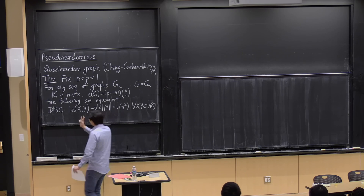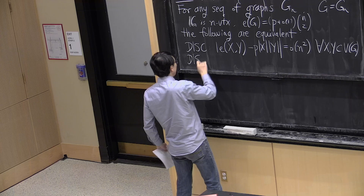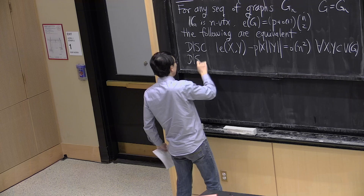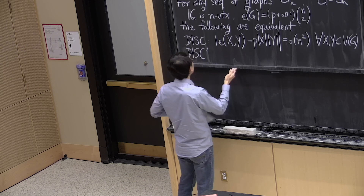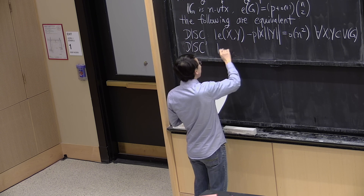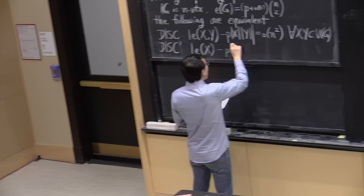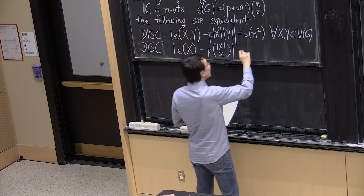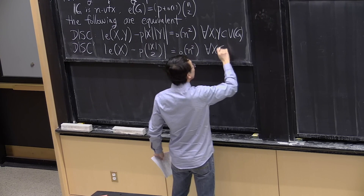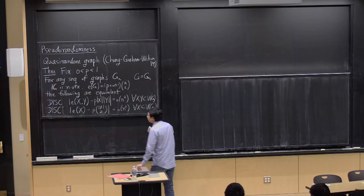Here's another notion, DISC prime, which is very similar — almost just a semantic difference. It says that if you look at edges within a single set, instead of taking two sets, you look at one set and count how many edges are in there versus how many you should expect based on density alone. These two numbers are also very similar to each other.